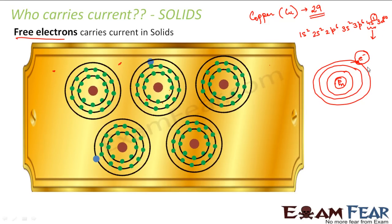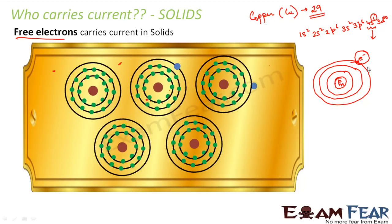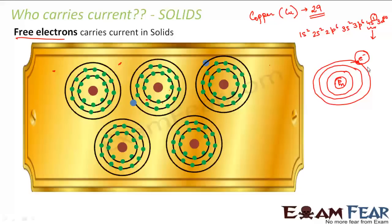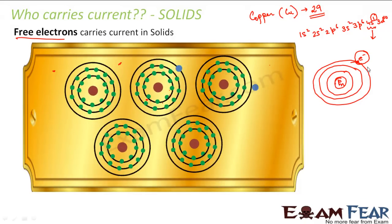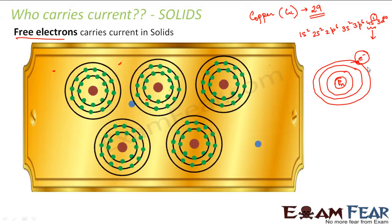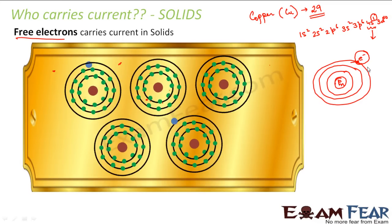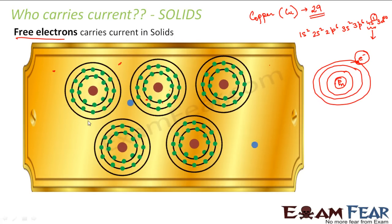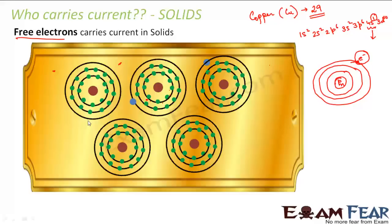The valence electron is the outermost electron and it is the most loosely bound or loosely attached to the nucleus, so it is easier for this electron to get away from the atom. So whenever some extra energy is given to the atom, the very first electron that comes out of the atom is the valence electron. So the valence electron always has a tendency to come out of the atom.